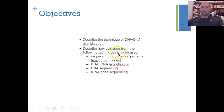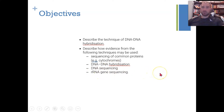describe how evidence from the following techniques may be used: sequencing for common proteins, e.g. cytochromes, DNA-DNA hybridization, DNA sequencing, and ribosomal RNA gene sequencing.